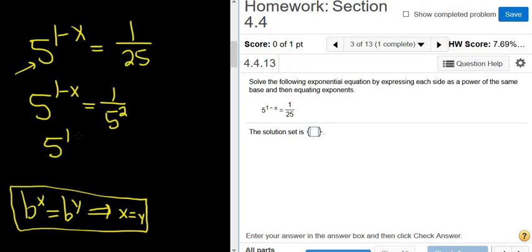So this is 5 to the 1 minus x. Now you can bring this one upstairs, and when you do that, the exponent becomes negative. So it's 5 to the negative 2. Okay, so now we're in a good place. Now we can actually drop the 5s, right? Because you have 5 to the 1 minus x equals 5 to the negative 2.